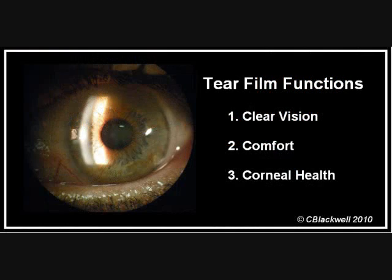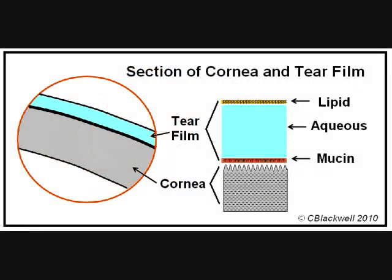Let's start with a quick review of what we talked about in Part 1. First, we discussed that a healthy tear film is needed for good vision, comfort, and health of the cornea. Second, the tear film has three layers. On the surface of the cornea is a mucin layer that allows the tears to spread out over the surface. The middle layer is a watery layer produced by the lacrimal gland, and on the surface is a layer of oil that reduces evaporation.